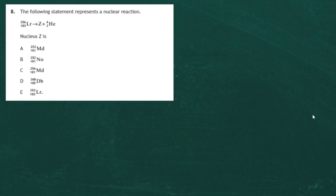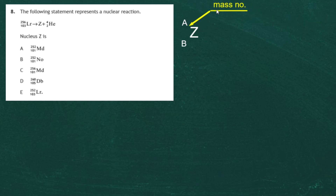Question 8 from Section 1 of the 2017 Higher Physics examination. The following statement represents a nuclear reaction: 256-103-Lr reacts to give nucleus Z plus 4-2-He. We need to find what nucleus Z is. A quick recap: the top number is the mass number representing protons and neutrons, the bottom number is the atomic number representing the number of protons, which identifies the element symbol from the periodic table.